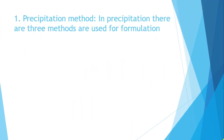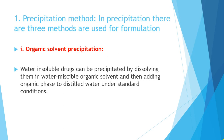First method: precipitation method. There are total three methods under this. First we will see about organic solvent precipitation. This method is used especially for drugs which are insoluble in water. The drugs which are insoluble in water can be precipitated by dissolving them in a water-miscible organic solvent.